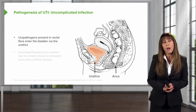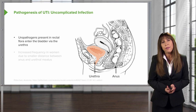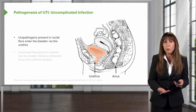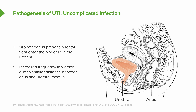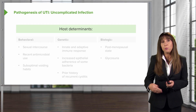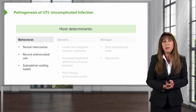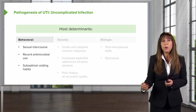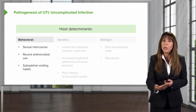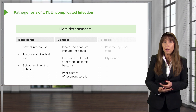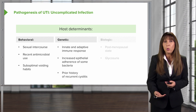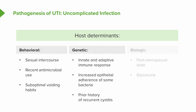When we think about the pathogenesis of UTI in an uncomplicated infection, uropathogens present in the rectal flora can enter the bladder by the urethra. We see increased frequency in women because of the smaller distance between the anus and the urethral meatus. Host determinants include behavioral factors — such as sexual intercourse, recent antimicrobial use, or suboptimal voiding habits — genetic determinants involving innate and adaptive immune response and increased epithelial adherence of bacteria, and biological determinants like the postmenopausal state or glycosuria, particularly in diabetics.